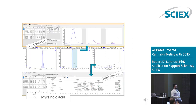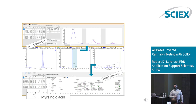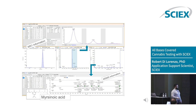So you have a certain degree of confidence — this is a predicted MS/MS fragmentation pattern, not from a true standard, but it gives you a direction in which to look. There are 526 proposed structures from that particular formula alone, and this turned out to be myricinoic acid.